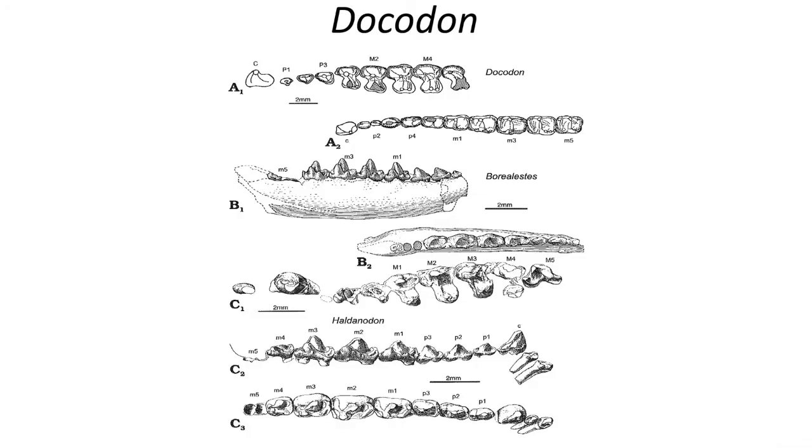Fossils are rarely found, but over the years a nice record has slowly emerged. The Docodonts are recognized by an unusual pattern of cusps and basins on their teeth, and the hourglass shape of their upper molars. Because these early groups are outside of the branch that includes all living mammals, they are sometimes grouped together in a broader group than just Mammalia, called the Mammaliaformes.